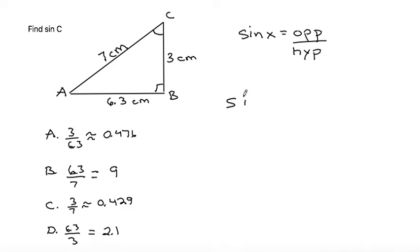So to find sine of C, we need to use the opposite side. The opposite side length is always the one that the angle is not touching. So if we go directly opposite, that would be the 6.3 side length.